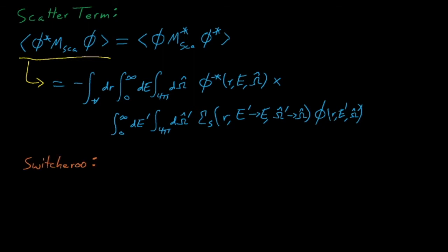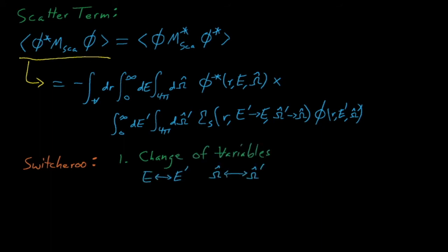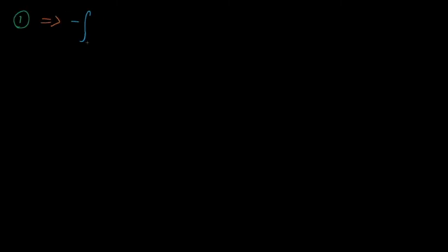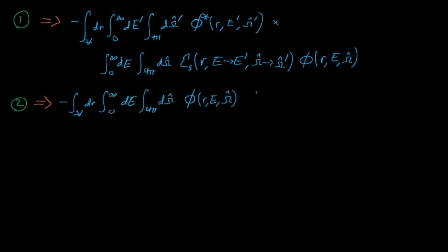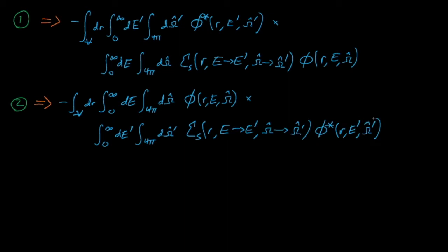To perform this switcheroo, we will need to do two things. First, we will swap the e and e-prime variables and the omega and omega-prime variables. We end up integrating out these variables anyway, so it's okay to swap them so long as we still integrate over each variable eventually. Second, we will reorder the integration in these expressions to move phi to the outside and phi-star to the inside of the expression. Swapping e with e-prime and omega with omega-prime gives us this expression. Then we swap the order of the e and e-prime integrals and the omega and omega-prime integrals. Because phi-star now only depends on e-prime and omega-prime, moving these integrals inside will move phi-star into the inside of the inner product.